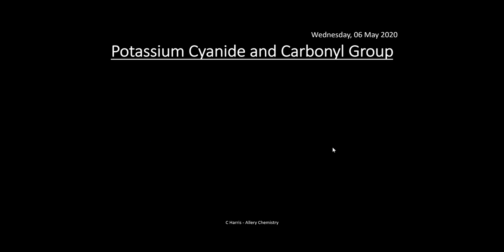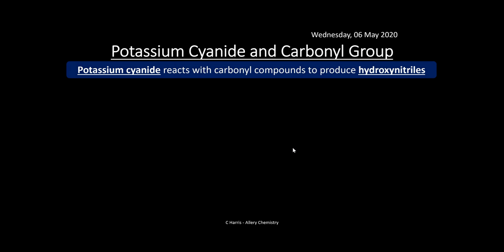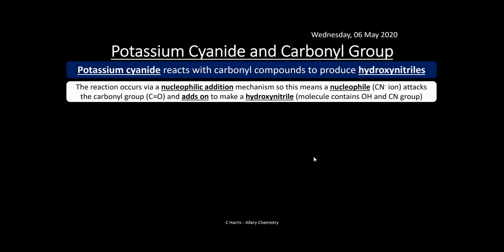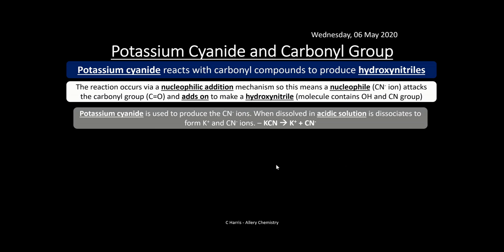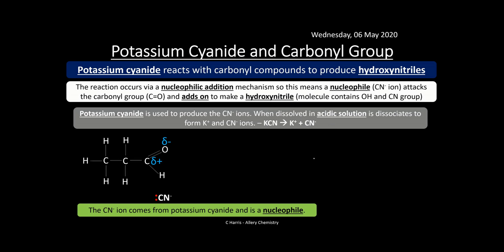Potassium cyanide reacts with a carbonyl group to form a hydroxynitrile. The reaction occurs via nucleophilic addition — the nucleophile is CN⁻, which can come from potassium cyanide or hydrogen cyanide. It attacks the carbonyl group, adds on, and makes the hydroxynitrile. A hydroxynitrile is simply a compound that has a hydroxy group (–OH) and a nitrile group (–CN). Potassium cyanide is dissolved in acidic solution, producing K⁺ and CN⁻ ions.